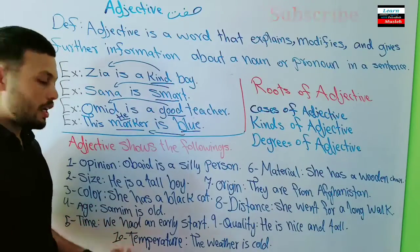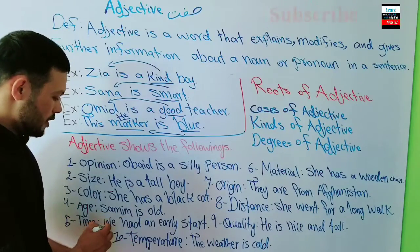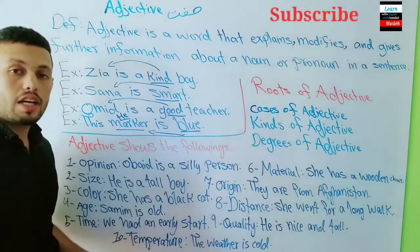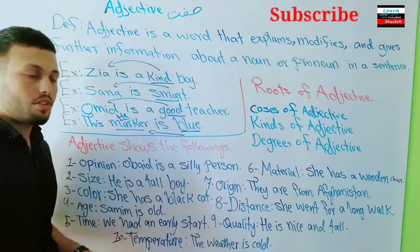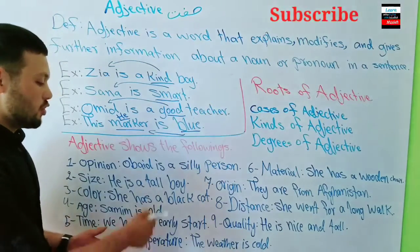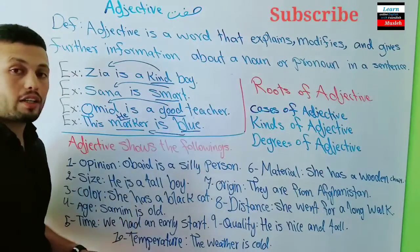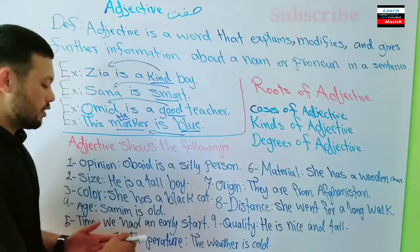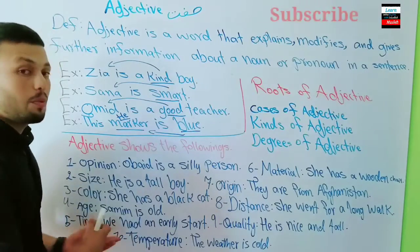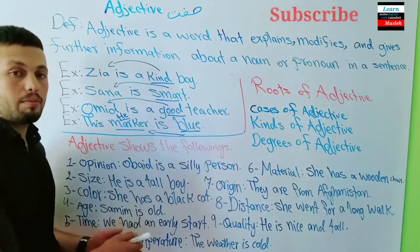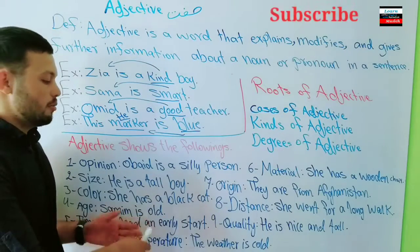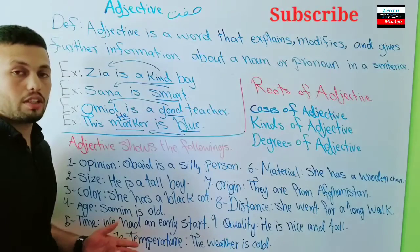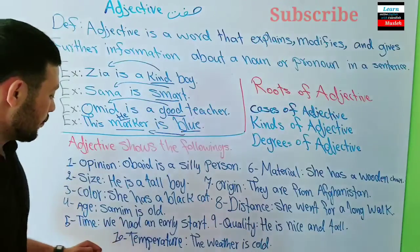Adjectives can also show time — 'waqt' in Dari. For example: 'We had an early start.' Here 'early' is the adjective that shows the time — it tells us when something happened.